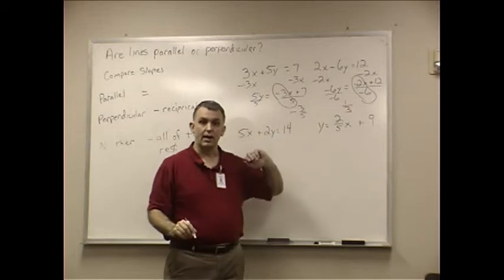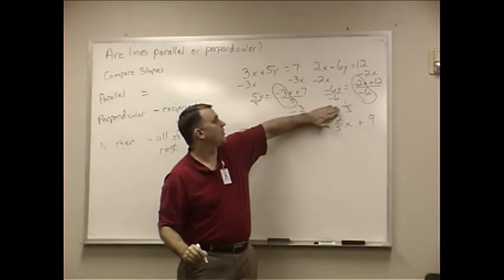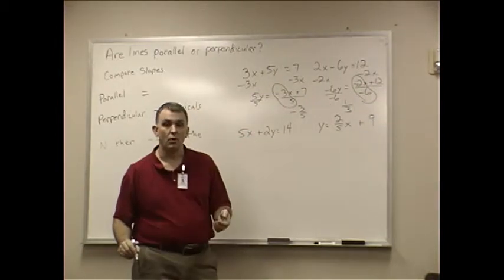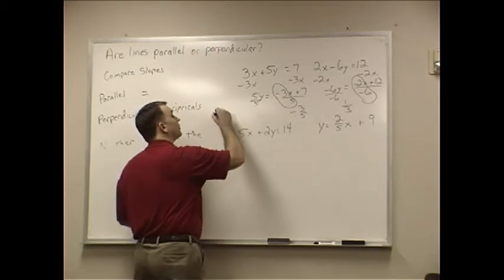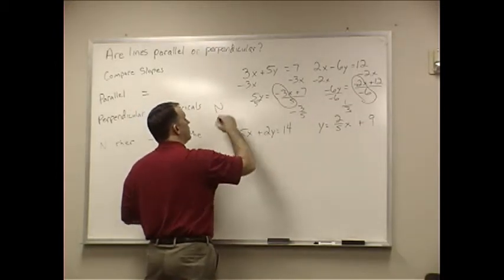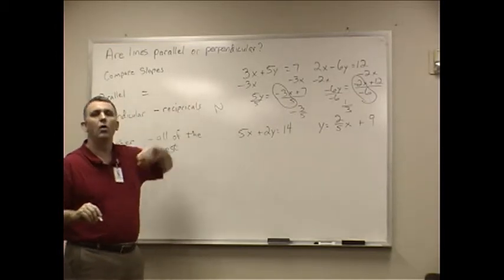They're not the same. Are they negative reciprocals of each other? Well, if you take this and flip it, you'd get 3 over 1 and you'd put a negative sign in front of it. In the case of this first one, it is neither. They are neither parallel or perpendicular.